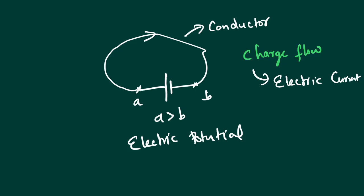There are positive charges and negative charges. We use protons as positive charges and electrons as negative charges. In a circuit, electrons flow. That flow of electrons — that flow of charge — is electric current.